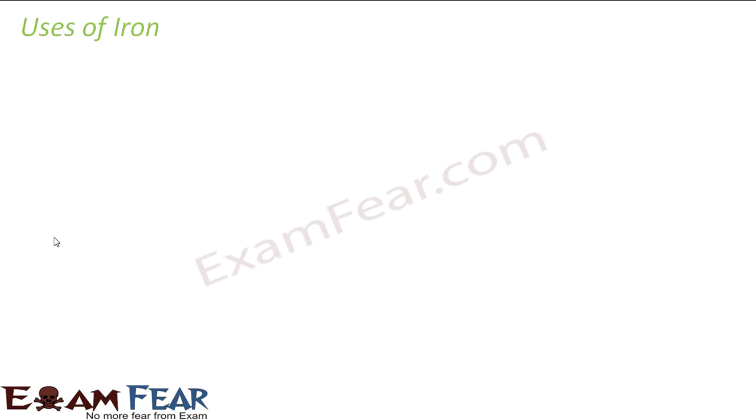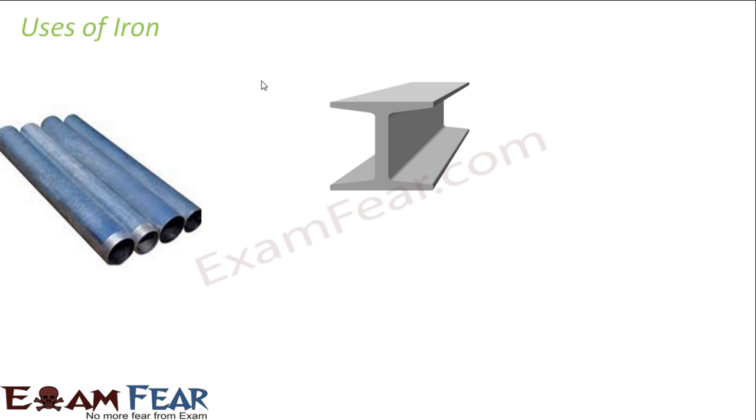Talk about the uses of iron. Iron is used for casting - creating cast iron, right? Railway sleepers and casting stoves, gutter pipes - iron is used. Wrought iron, as I told, this is our example of cast iron.